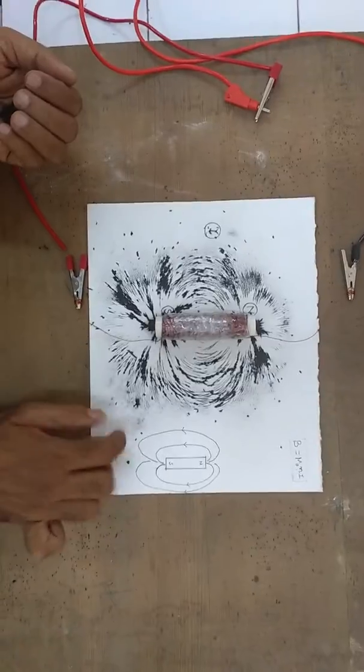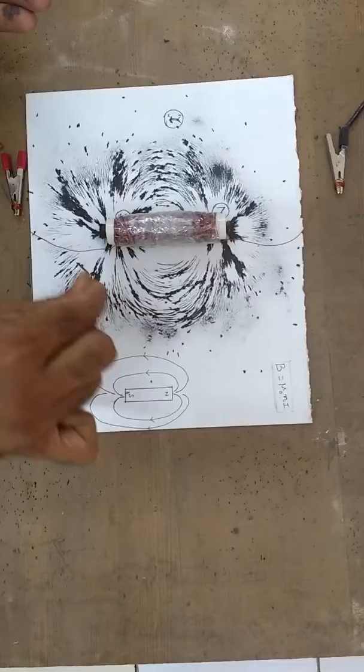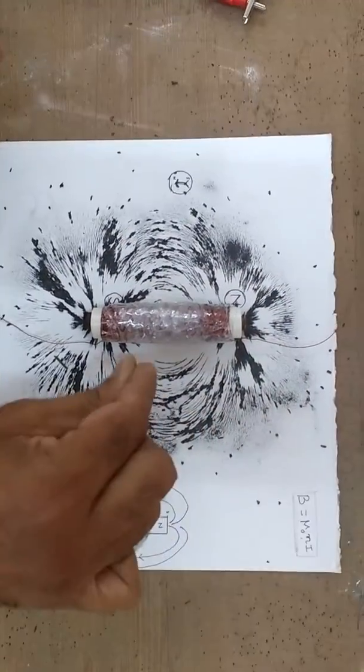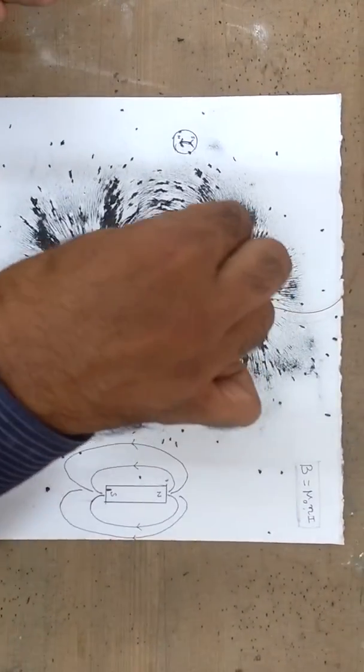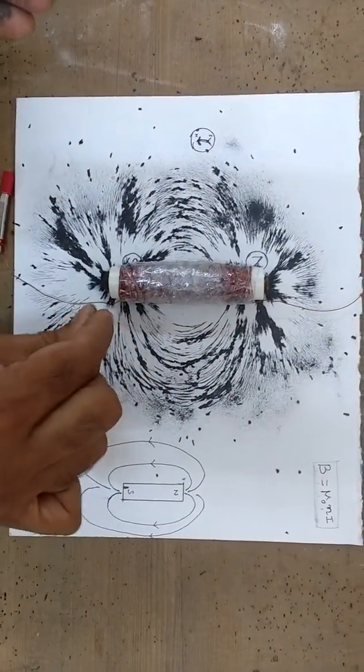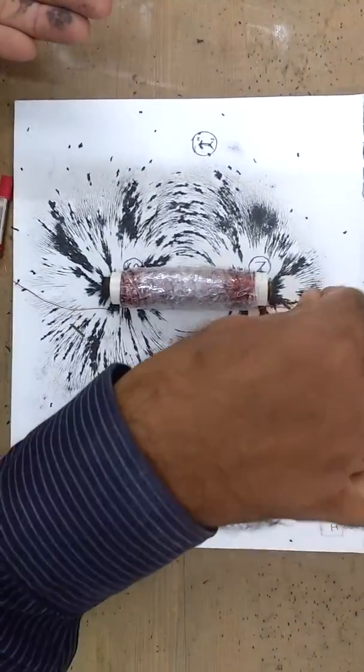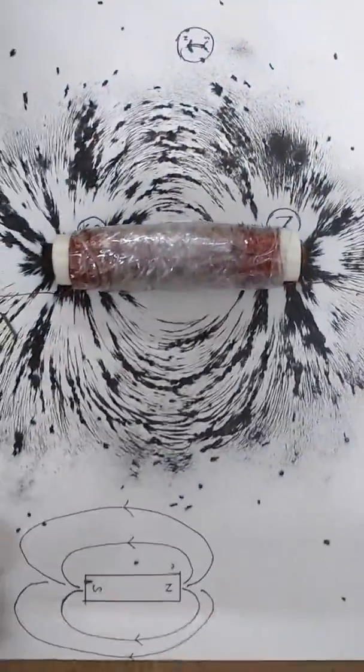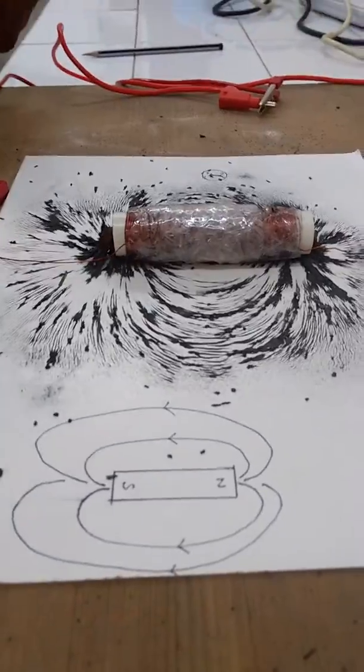This is the formation of magnetic field lines. You can see here, the magnetic field lines. So this becomes an experimental demonstration, and you can show this to class 10th and class 12th standard students so that they can understand this concept very easily. This is how the field pattern looks like.